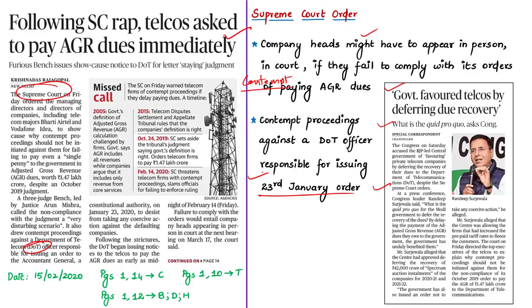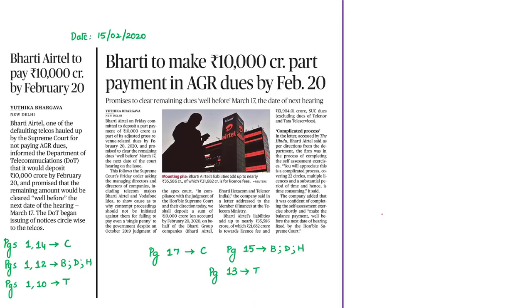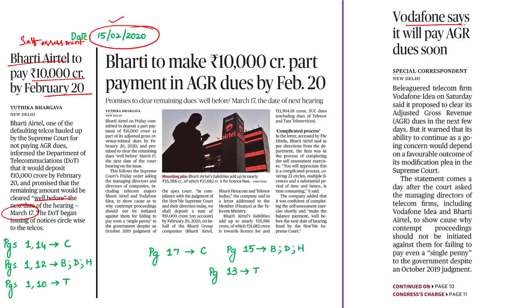The opposition party alleged that the 23rd January order was favoring telecom operators. Following the Supreme Court's order, Bharti Airtel committed to deposit about 10,000 crore rupees as part of its AGR dues and promised to clear remaining dues well before 17th March. The company stated it was in the process of completing its self-assessment exercise in order to pay the AGR-related dues.